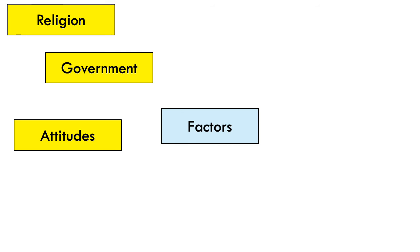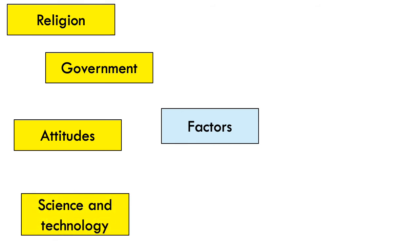The third factor is attitudes — the general view that people hold at the time. In some periods people are quite traditional, set in their ways and resistant to change, while in others they are more inquiring and want to understand the world. Fourth is science and technology, probably the easiest factor to make connections with. Developing technology has improved medicine — unlike our medieval peasant, today we have the benefit of developed scientific knowledge and technology to understand germs and bacteria.